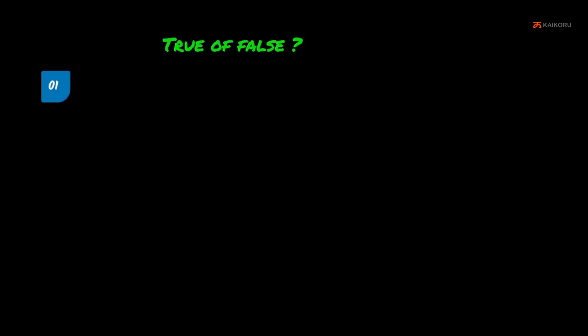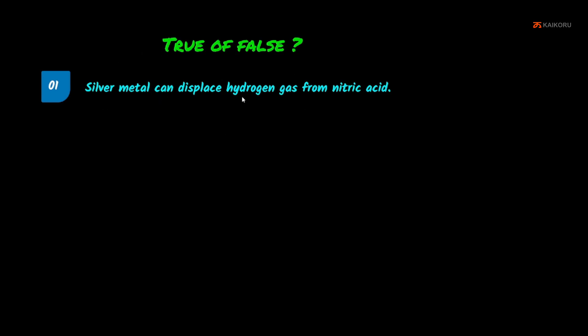True or False. First: silver metal can displace hydrogen gas from nitric acid. In a single displacement reaction, only more reactive elements can displace others. Silver is less reactive than hydrogen, so displacement does not occur. The answer is False.